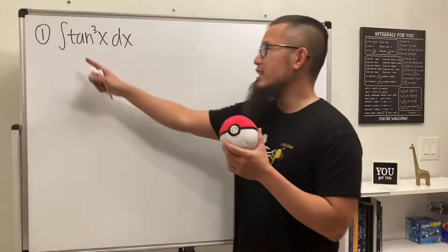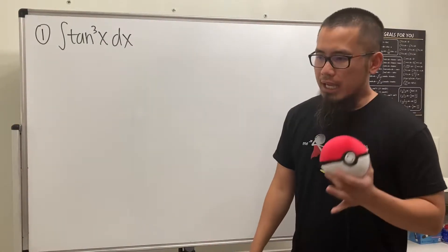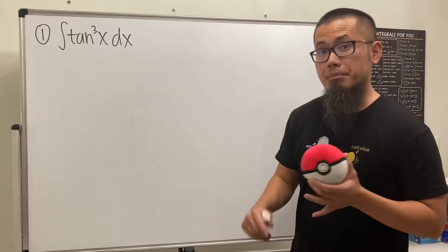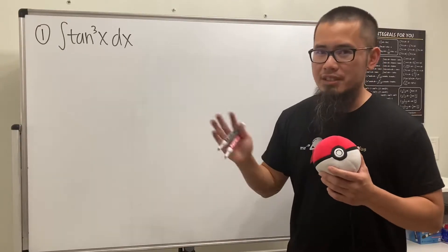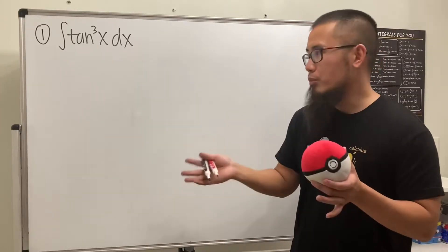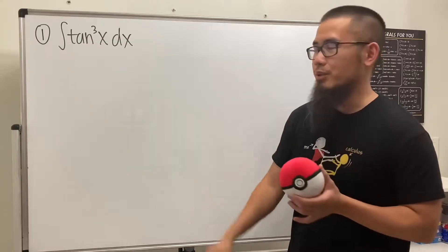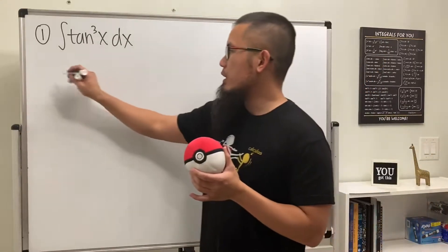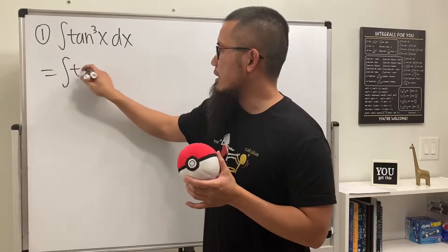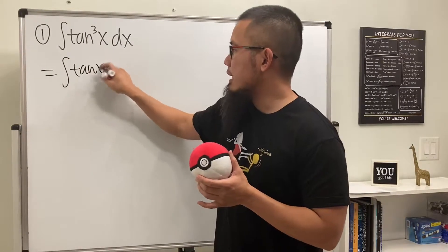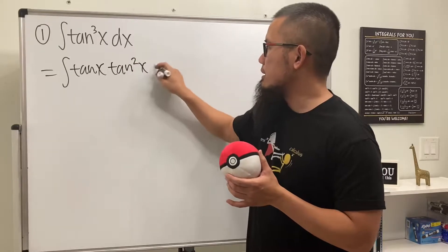The first one is the integral of tangent to the third power of x. We could write this in terms of sine and cosine, but this video is all about tangent and secant. So let's stick with tangent and secant only. We can break this apart as tangent x times tangent squared x dx.